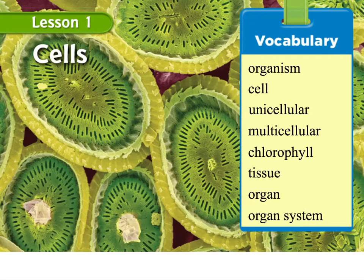This lesson is for Chapter 1, Lesson 1: Cells. It's the beginning of our unit on cells and kingdoms. You can see at the right side of the screen the vocabulary that we'll be discussing for this lesson. Vocab words include organism, cell, unicellular, multicellular, chlorophyll, tissue, organ, and organ system.